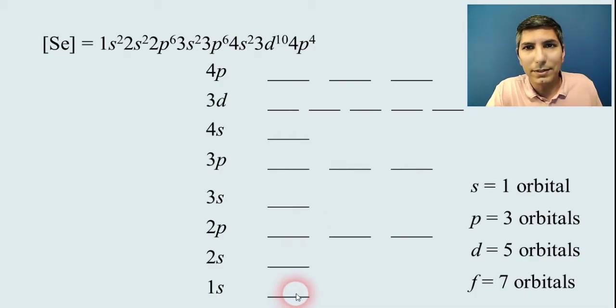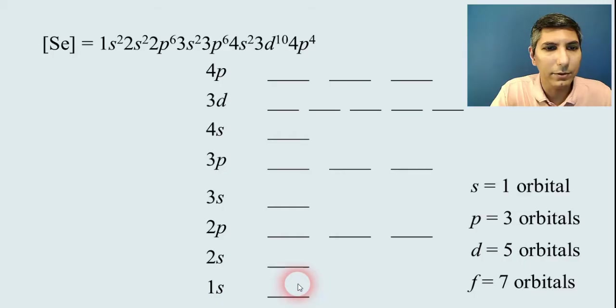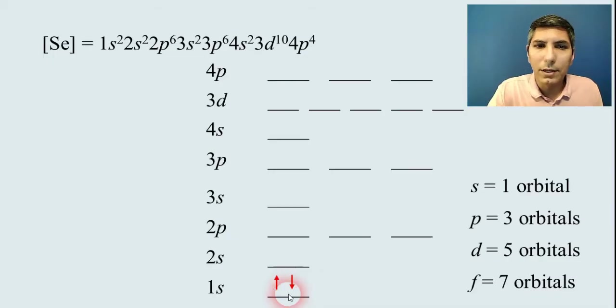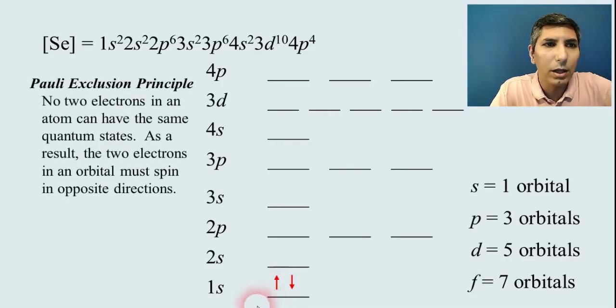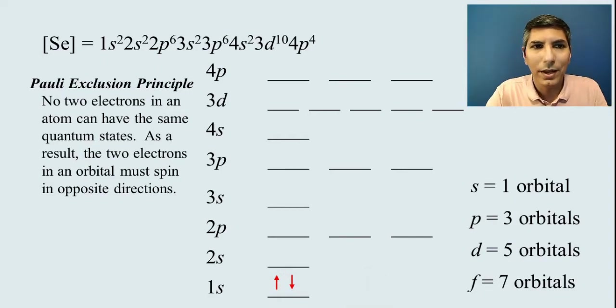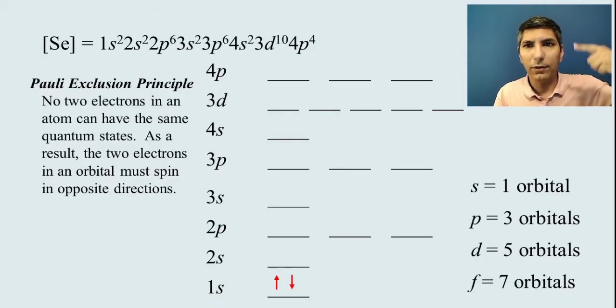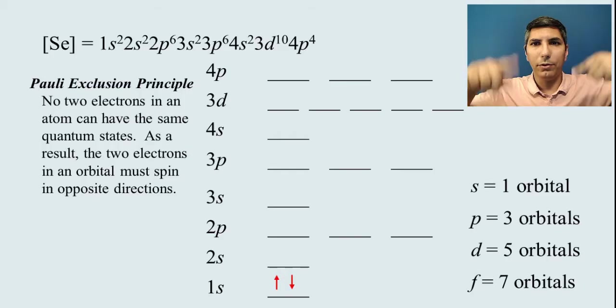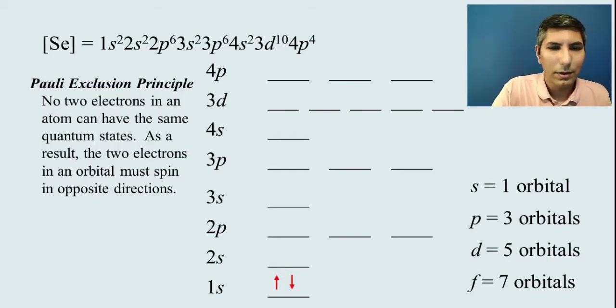And so we're going to start filling those up. So we'll start with 1s². By the way, if you ever get to f, it's going to be seven orbitals, but we don't usually do that in AP chemistry. So 1s has two, so we'll pair them up like this. And just so you know, the reason that they're going in opposite directions—one arrow is going up and one arrow is going down—is we have something called the Pauli exclusion principle. And this basically tells us that no two electrons in an atom can have the same quantum states. And so what that means is the two electrons have to be spinning in opposite directions. So if one is spinning like this, that means the other has to be spinning in the opposite direction. So that's why they're in—you have two arrows in different directions.